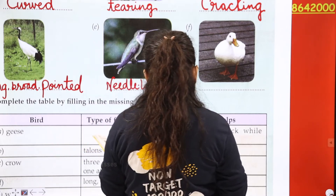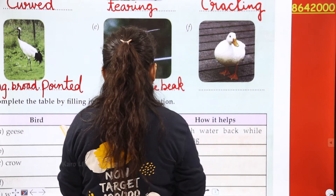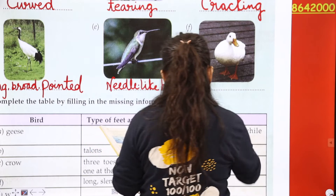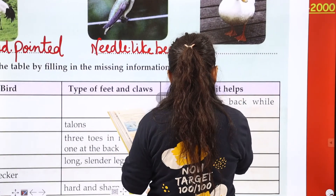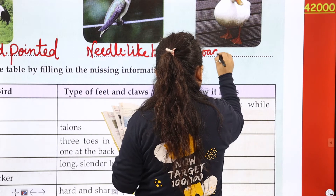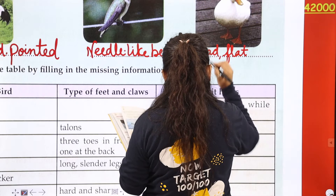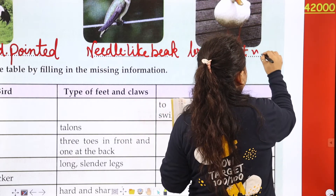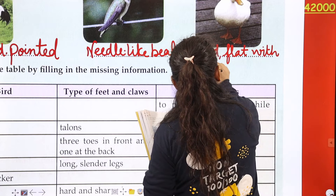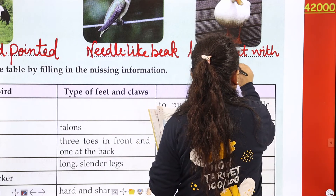Ducks, geese and swans have this type of beak. Write: broad, flat, with a tiny comb-like structure.